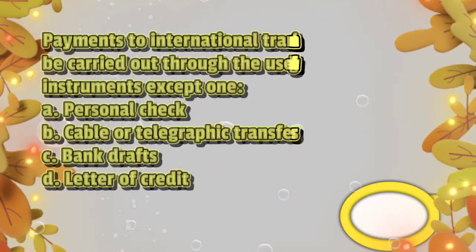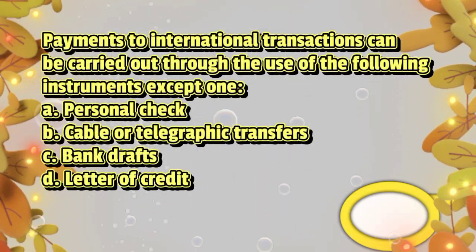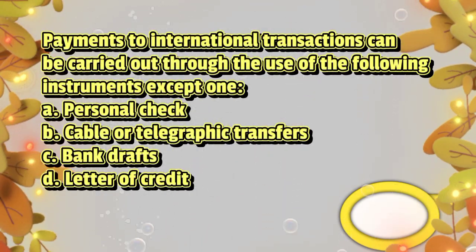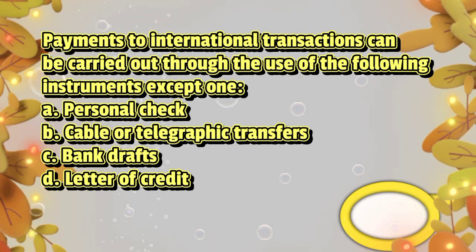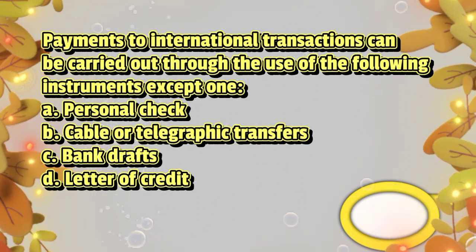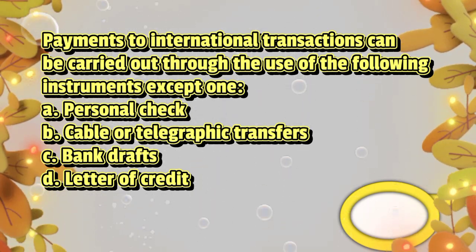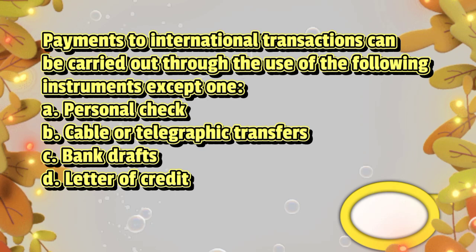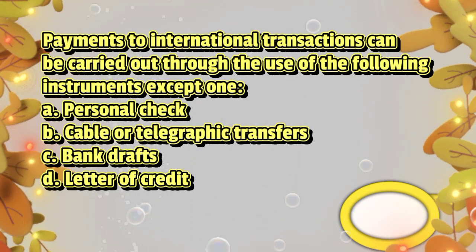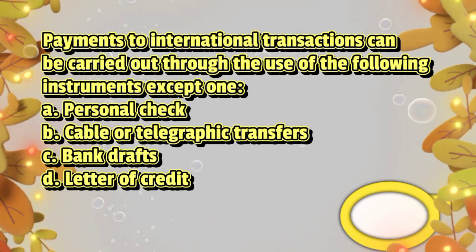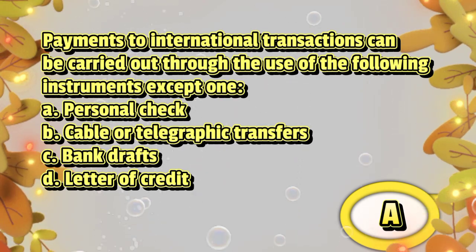Payments to international transactions can be carried out through the use of the following instruments, except one. A. Personal check, B. Cable or telegraphic transfers, C. Bank drafts, D. Letter of credit. The answer is letter A.